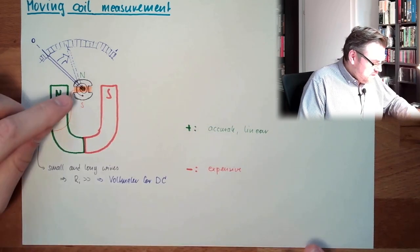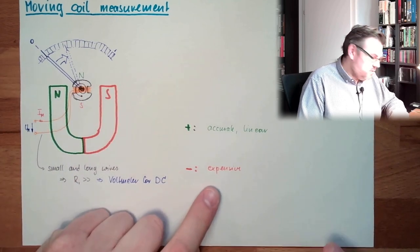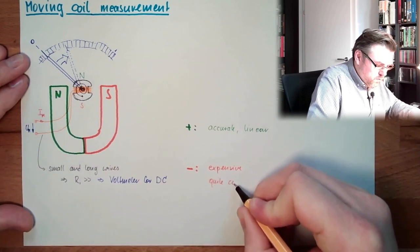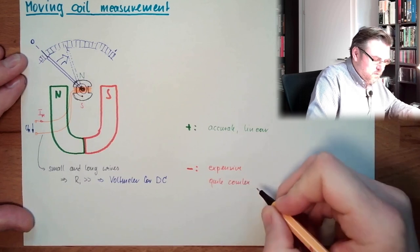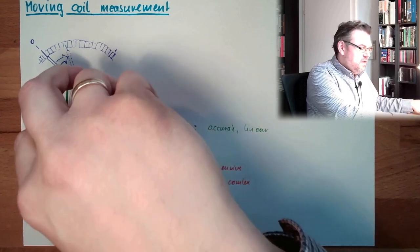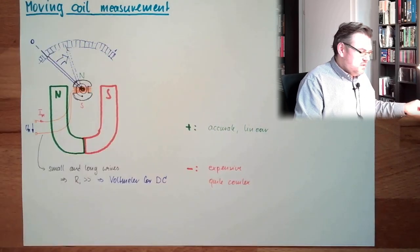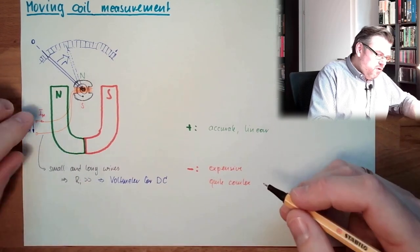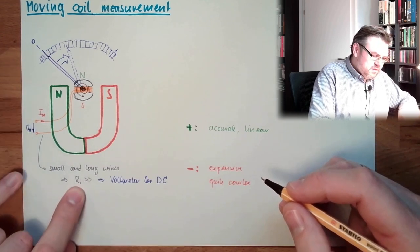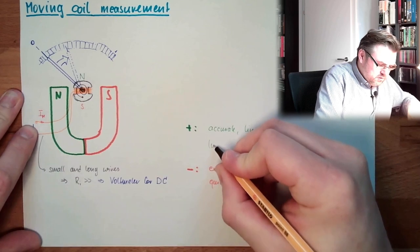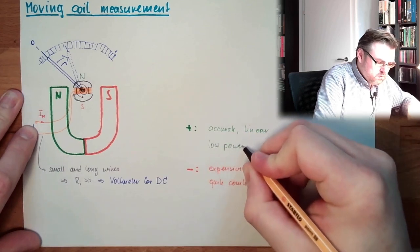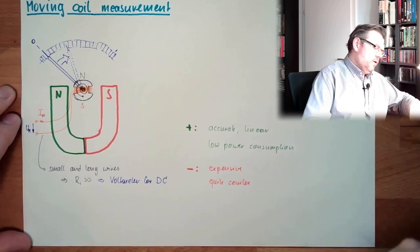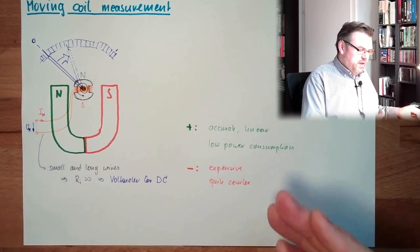One downside on the other hand is it is expensive. So we have an expensive measurement device, which is however pretty accurate and linear. And because this is a long coil, it makes it expensive. It's also quite complex. It's quite complex because of this, you have to deal somehow with the movement and the springs. However, we have a very low power consumption because the measurement voltage, you know, it's a big resistance and low power consumption.